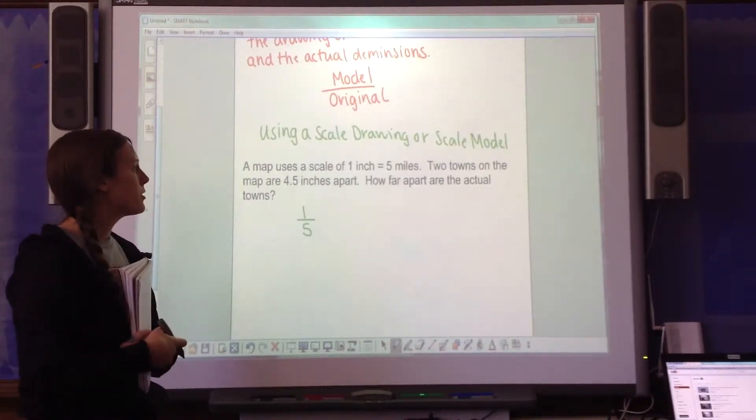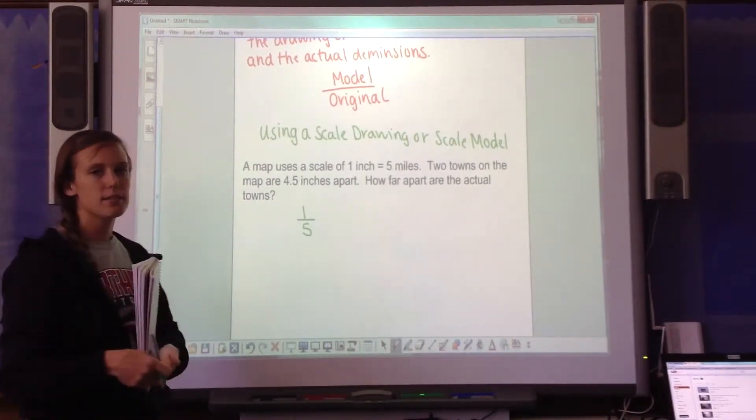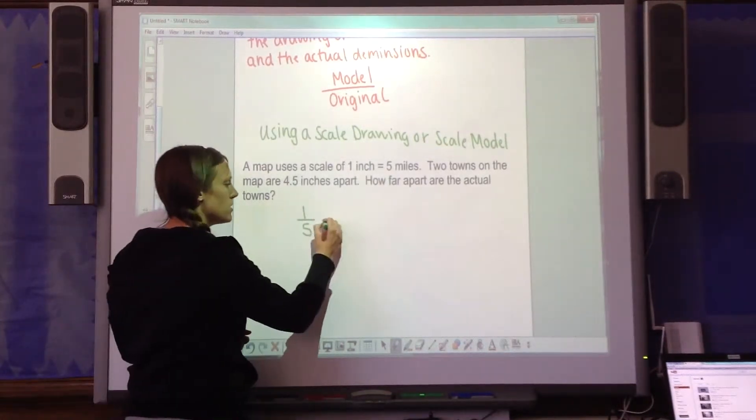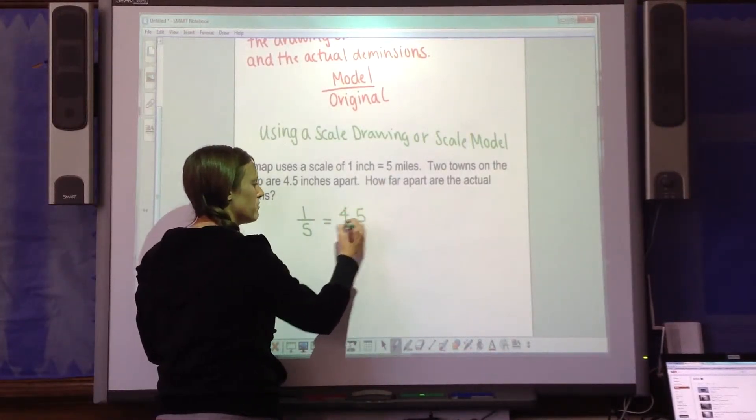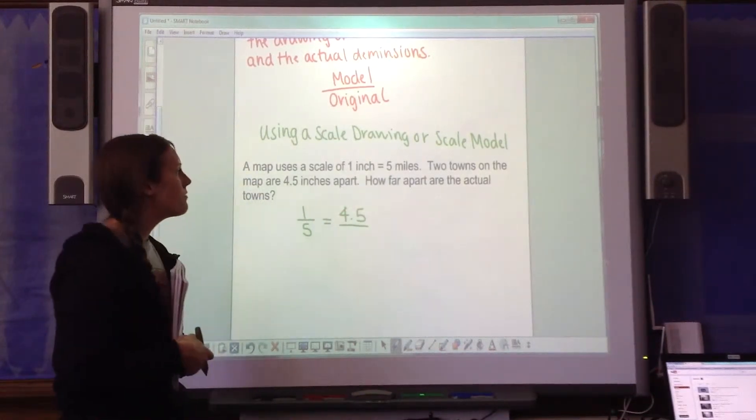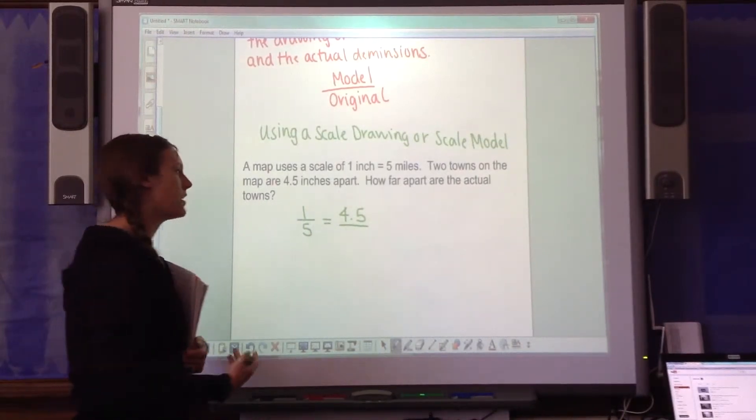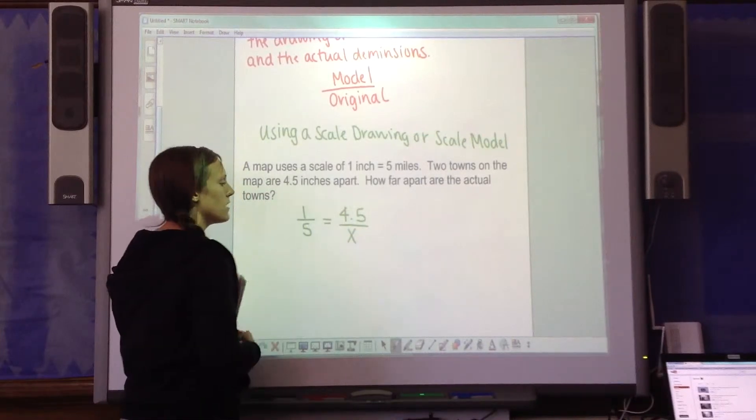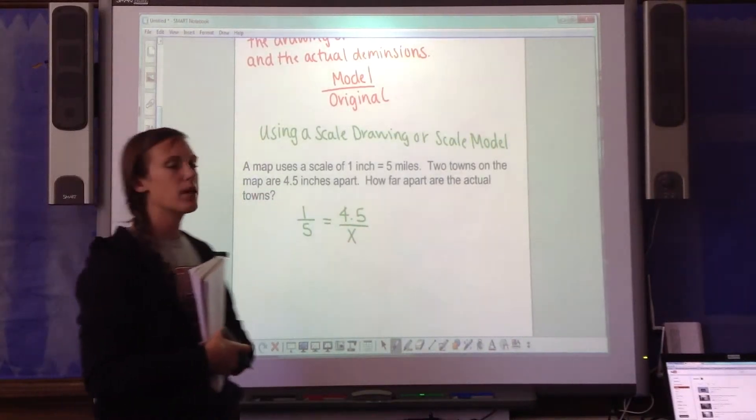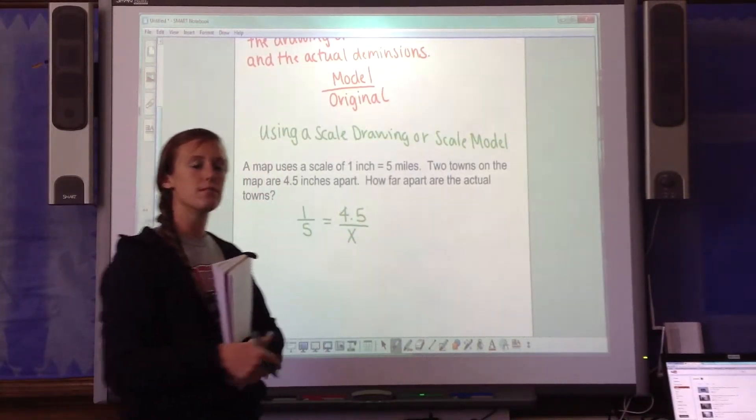Two towns on the map are 4.5 inches apart. Well, that's a model. That's not an original. So in the other ratio, you're going to use 4.5. And they want to know how far apart are the actual towns. And that's the original. That's what you're trying to find. We have another proportion. We're trying to find the missing side.